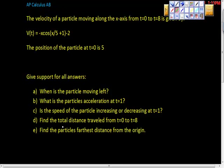Here's a question on particle motion. The velocity of a particle moving along the x-axis from time 0 to time 8 is given by this function. The position of the particle at time 0 equals 5, which will be important later. We're going to answer these five questions.